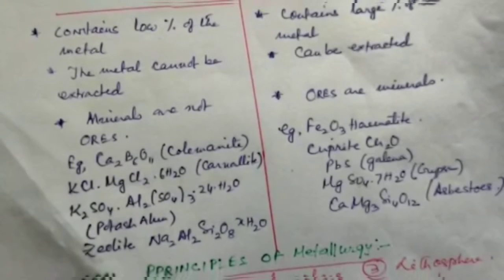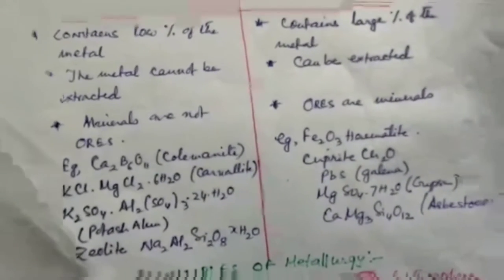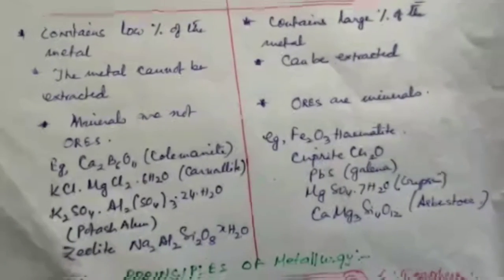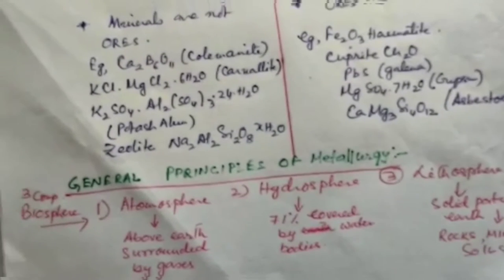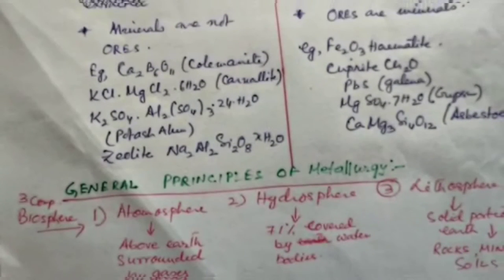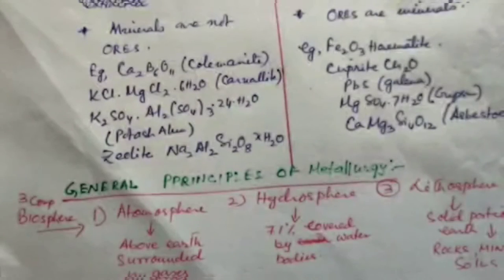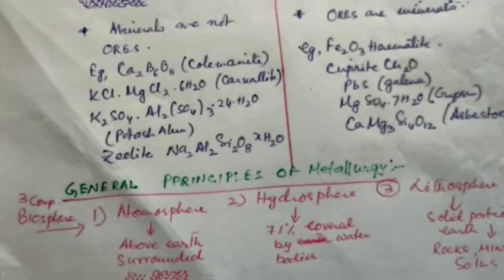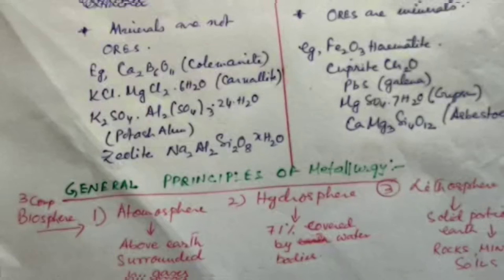Examples of ores include galaminite, kernelite, potassium, and asbestos. Now for the general principles of metallurgy — we know there are three parts of the Earth: atmosphere, hydrosphere, and lithosphere. The atmosphere is the gaseous layer surrounding the Earth. The hydrosphere is the water portion of the Earth, and the lithosphere is the solid portion of the Earth.